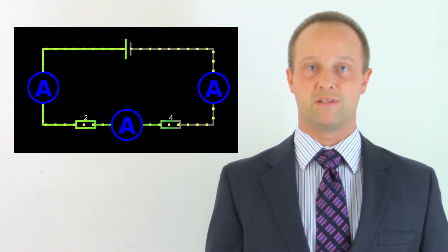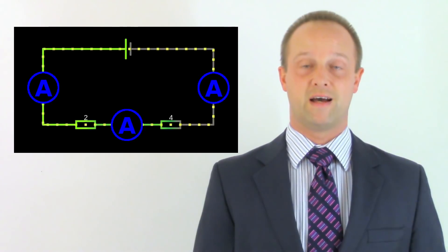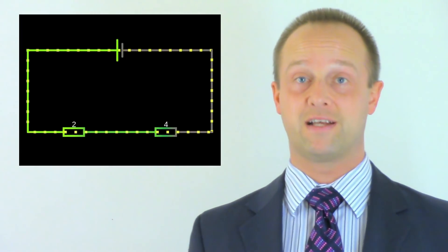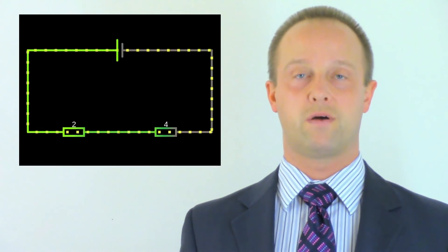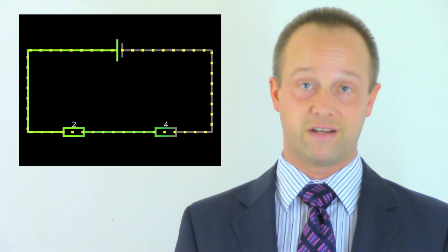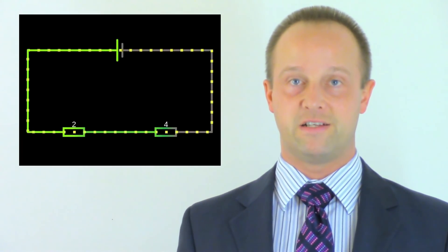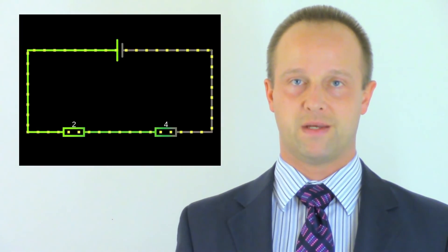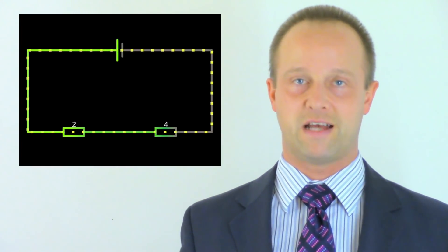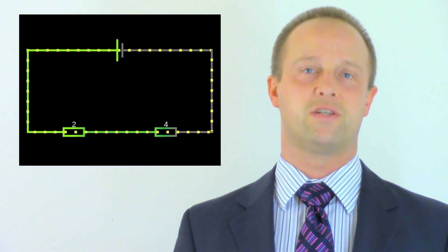This is why ammeters always have to be in series with the component you're measuring the current through — all of the current has to flow through the ammeter too. Now I understand that may feel a little counterintuitive. Clearly something gets used up, otherwise batteries wouldn't run down. So what is it that gets used up? Well, it's actually the energy that the current is carrying. The current has energy when it leaves the power supply — it's got electrical potential energy. And as it moves through the components, it's that potential energy which gets used up, a little bit like the petrol in our cars. That's the car's energy source in the form of chemical potential energy, being used up as they struggle along the bumpy road. Now, strictly speaking, we should say that the energy is transferred, not used up — it's just changed into other things like kinetic energy and heat energy. However, I'm going to stick with saying used up for now just to keep things simple.